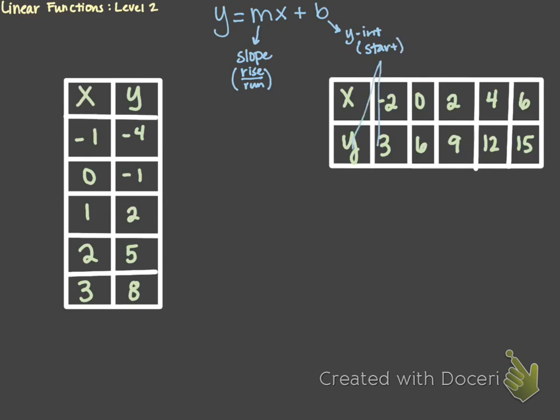Alright, so with our two tables, we want to identify our slope as well as our starting value. To find the slope of a table, we are going to look at how we can get from one point to the next on both the x and y coordinates. Let's start from our very first point. On the x — otherwise known as our run — to get from negative 1 to 0, we are going to add 1.